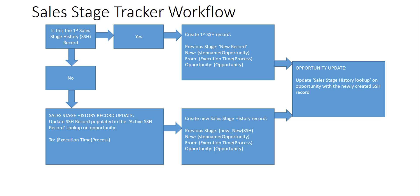Then we set the new field to the step name — that's the pipeline field on the opportunity — and set the from date to the execution time of the workflow, and link it back to the opportunity. After that, we again update the sales stage history lookup field on the opportunity with the newly created record. So we're constantly date-stamping the one that's currently in the lookup, creating a new record, populating it in the lookup, dropping the old one, setting in the new one, date-stamping that one, and so on.